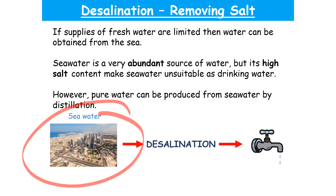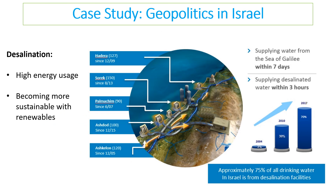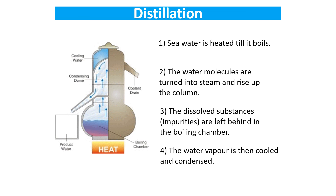One thing Israel has done is invest heavily in desalination — taking salt water and removing the salt to make it drinkable. Israel has become one of the world leaders in this. Although desalination plants use high amounts of energy, with renewable energies becoming more viable it has become a more sustainable method. The distillation method involves heating salt water until it boils, leaving the salt behind in the container, then cooling and condensing the steam to produce pure water.